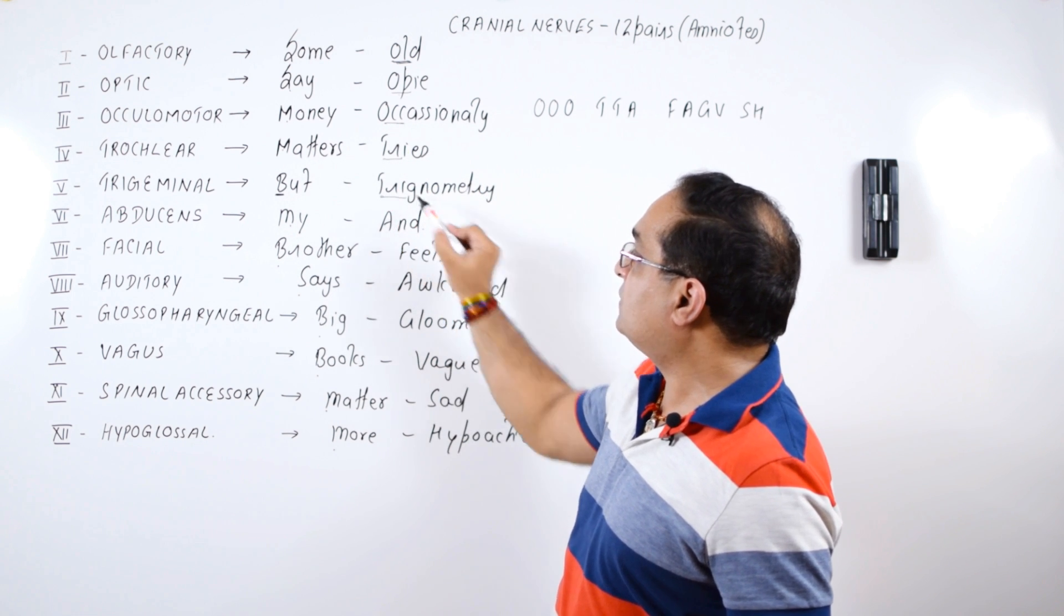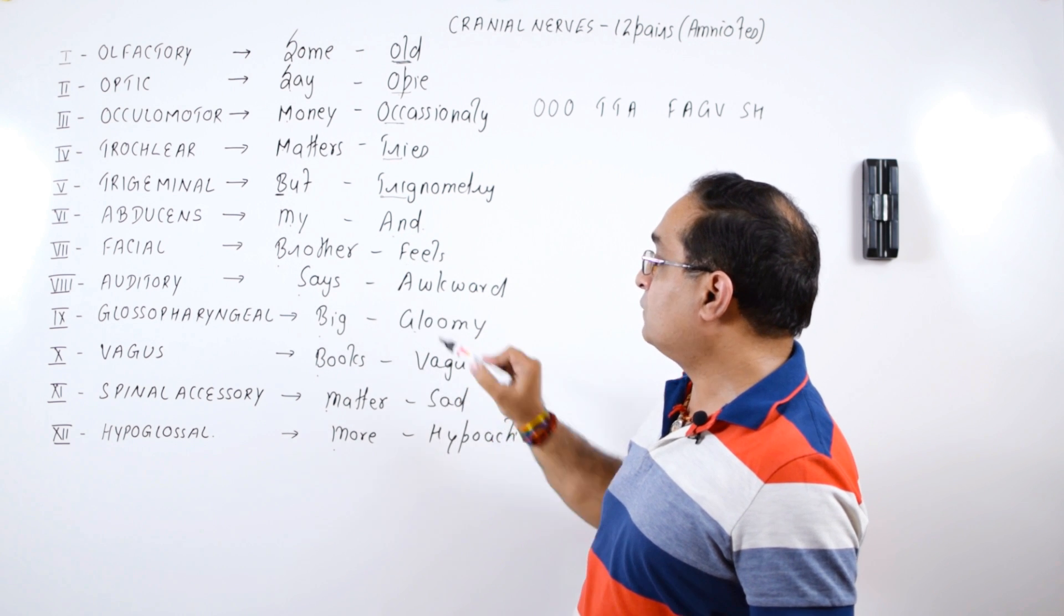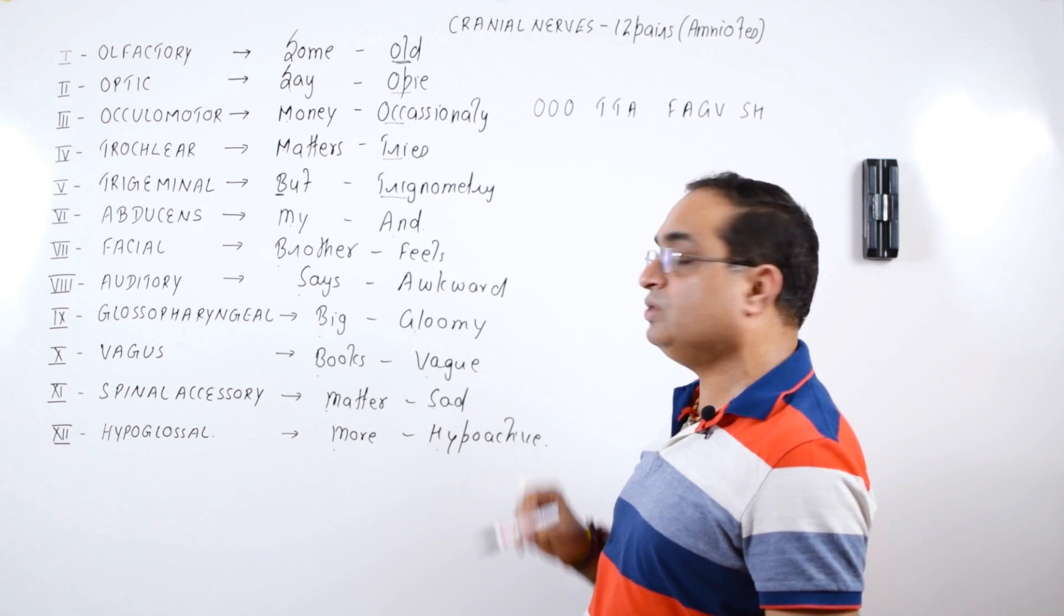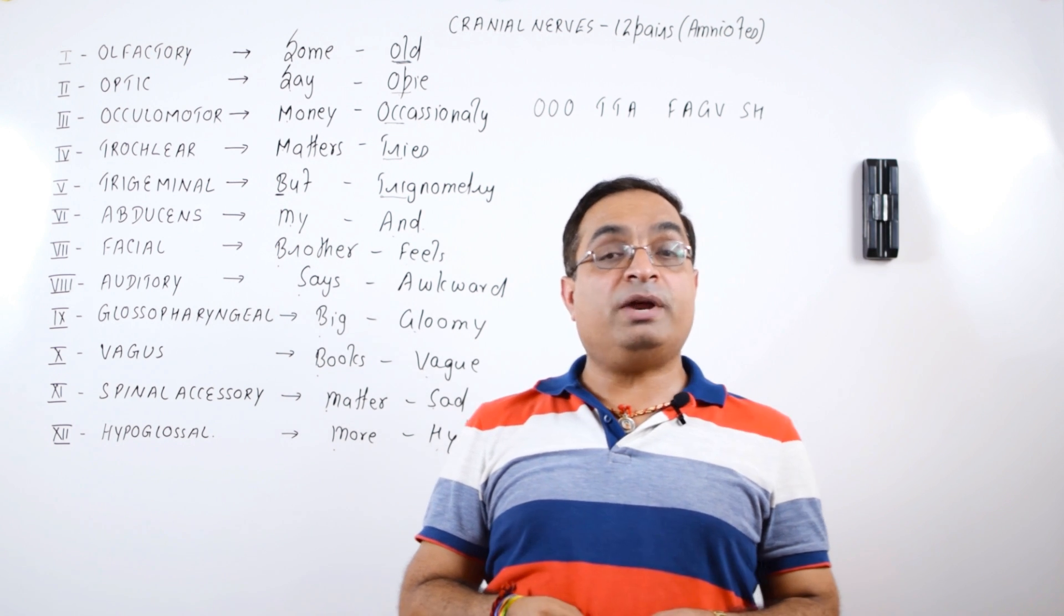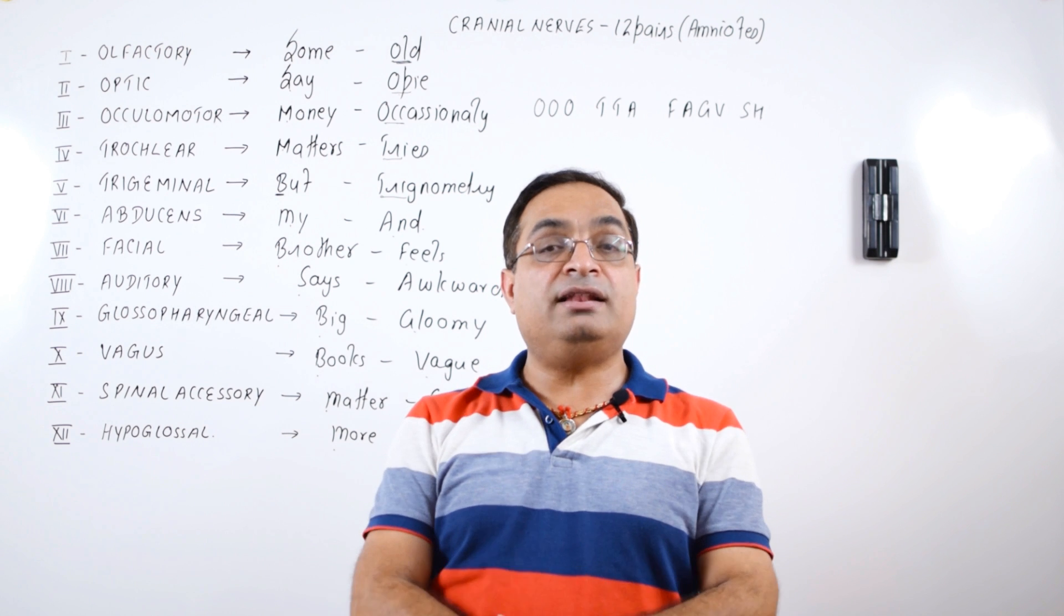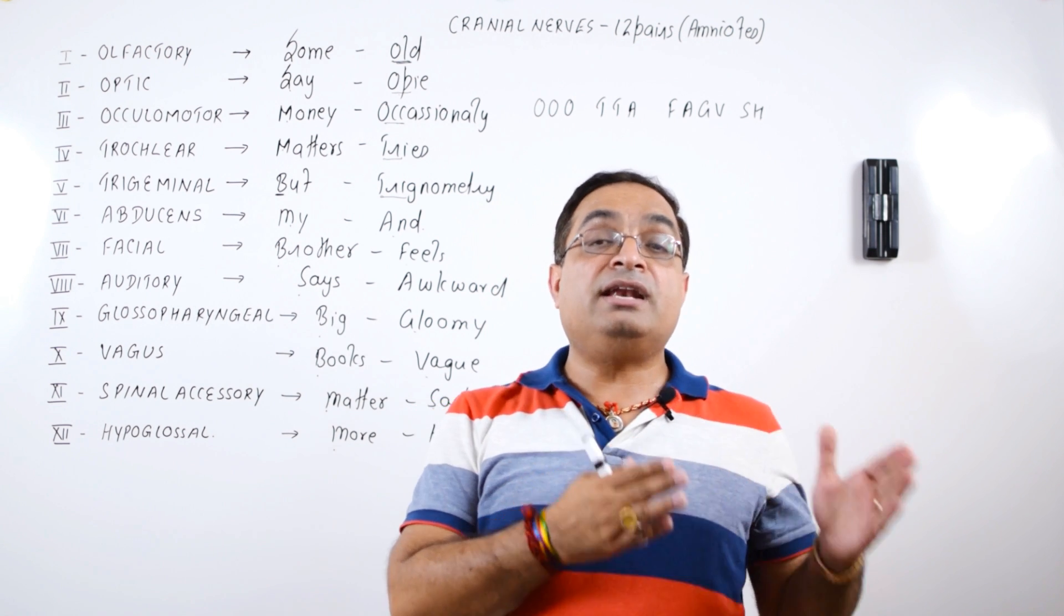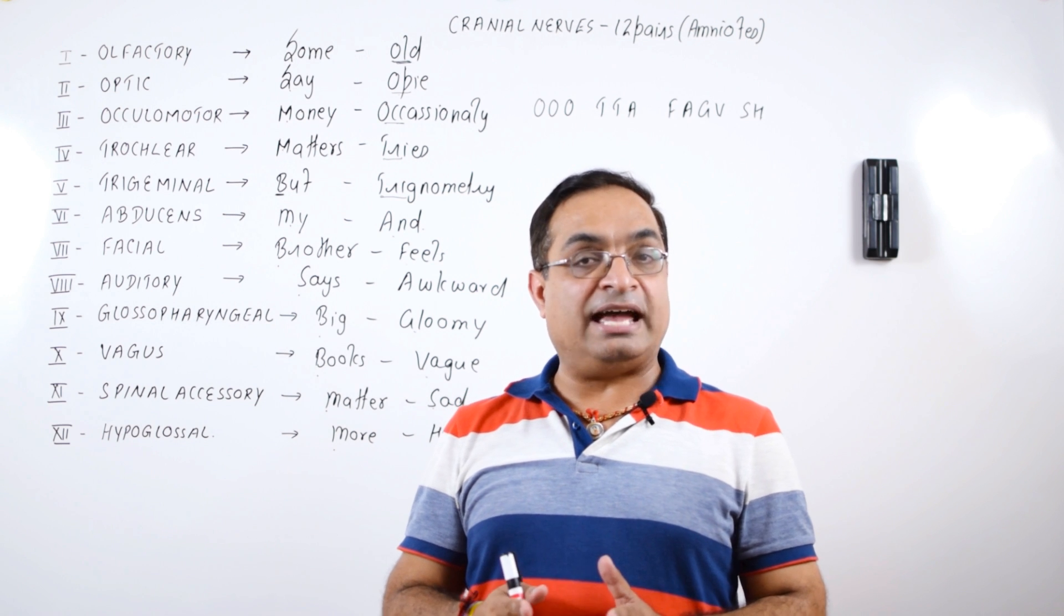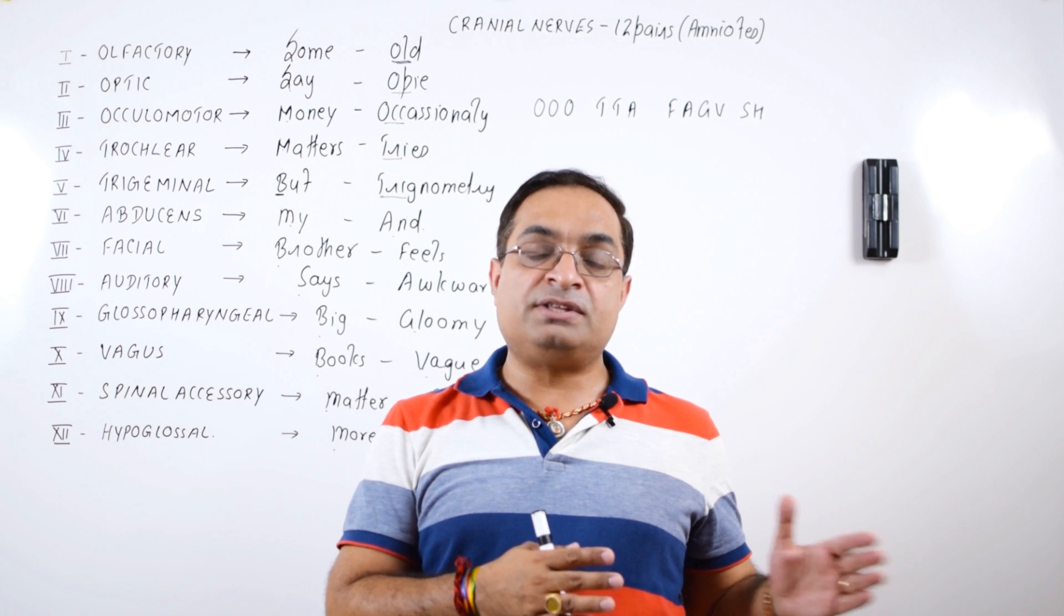Then it is trochlear, then it is trigeminal, abducens, facial, auditory, glossopharyngeal, vagus, spinal accessory and hypoglossal. So that was a trick to remember the names of the cranial nerves in sequence and to remember their nature, that which one is sensory and which one is motor.